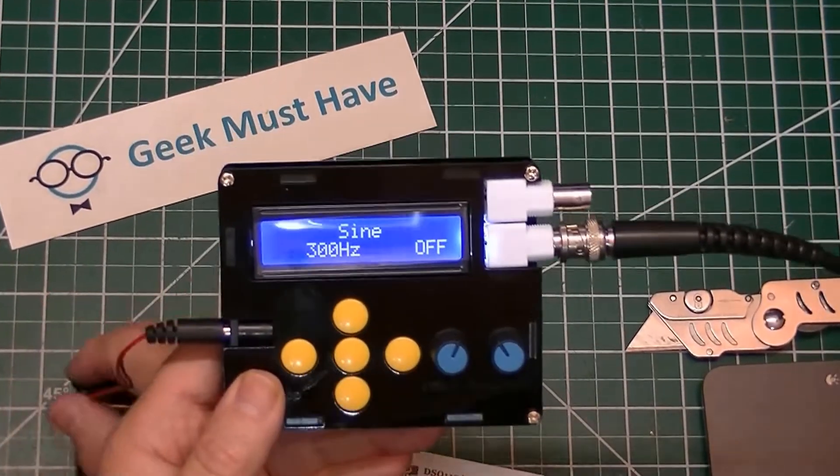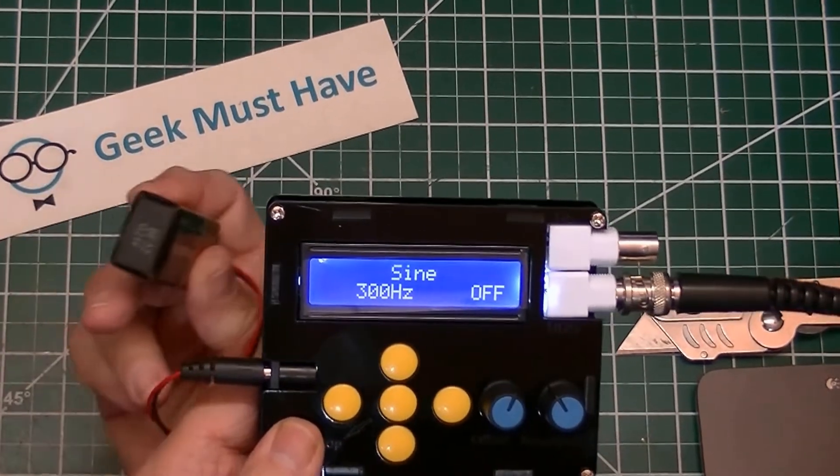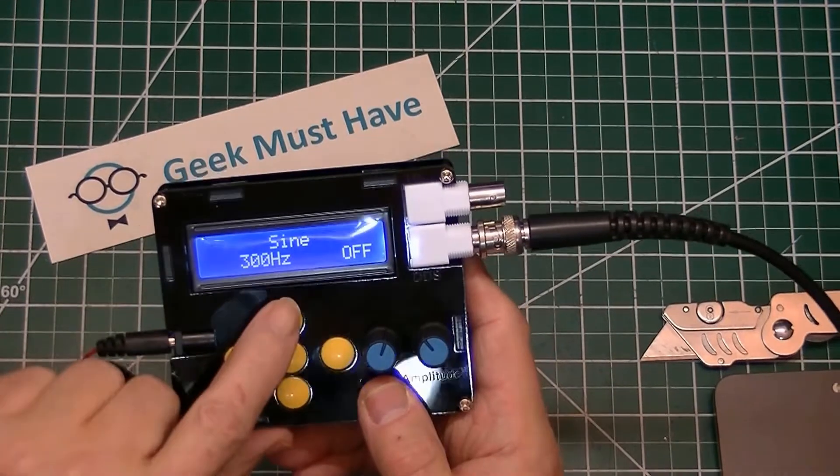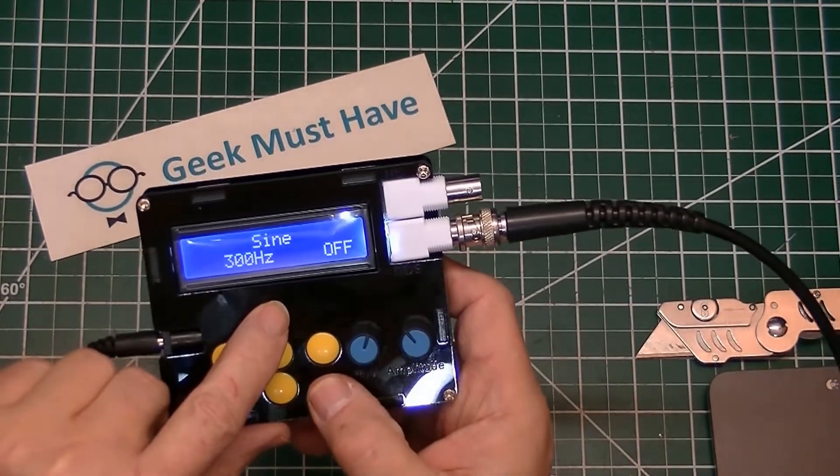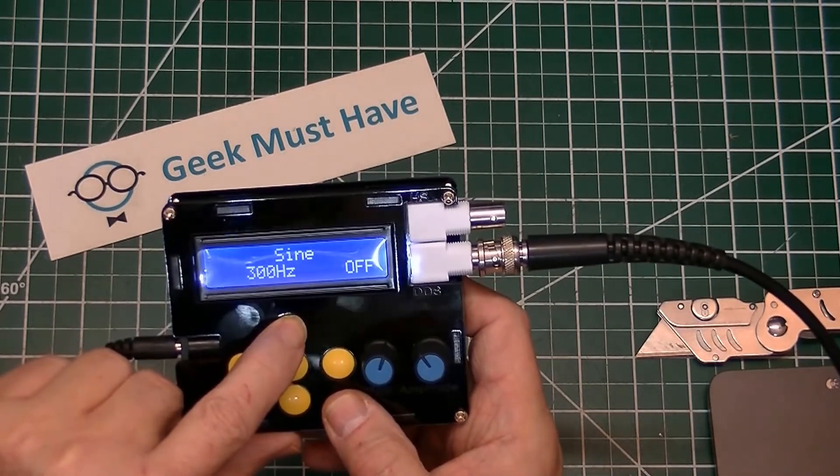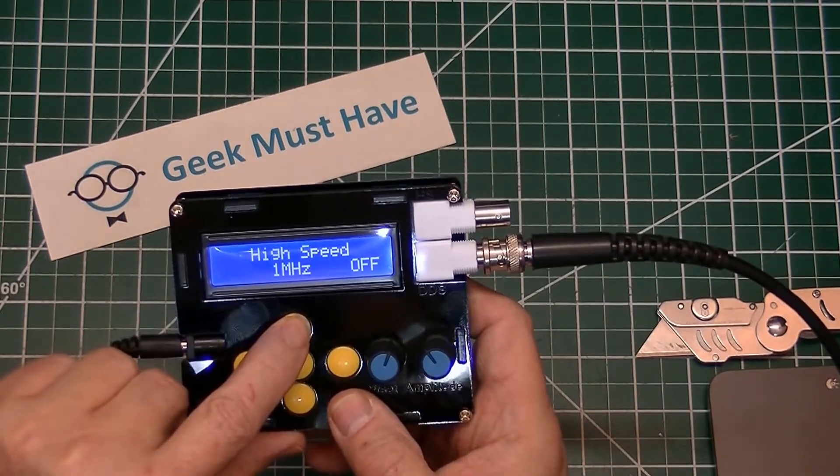So here I've managed to hook a little 9 volt battery up to this. We'll go through some of the functions that this thing has. This is sine. I currently have it dialed up for 300 Hertz. There's sine, there's high speed.